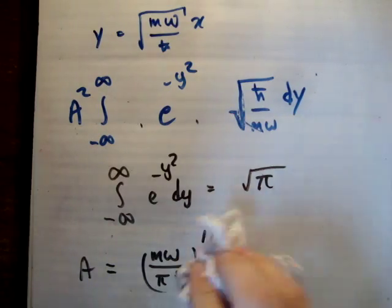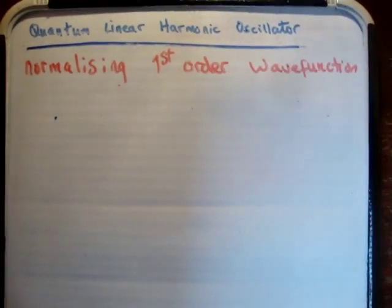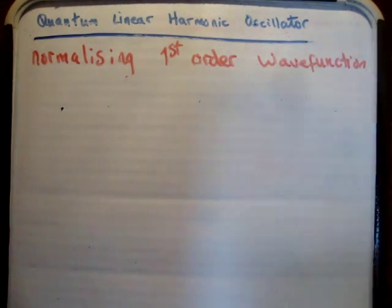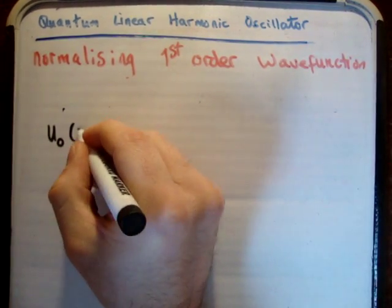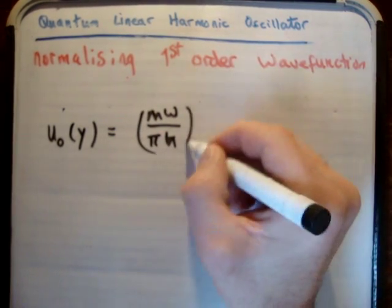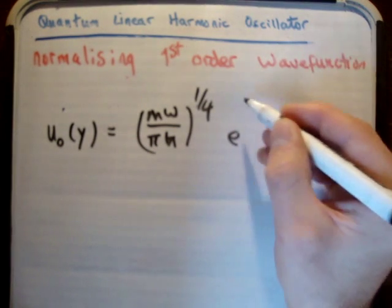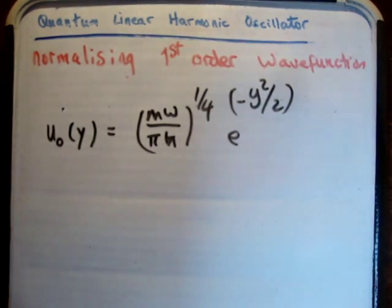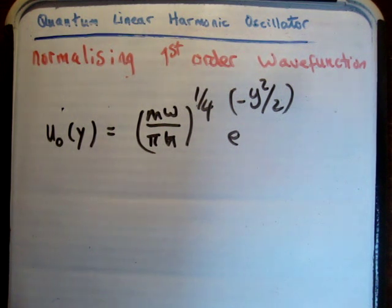It's pretty straightforward. So just for a bit of rigor, to write down our normalized first-order wave function, we know that u zero of y is equal to m omega over pi h bar to the quarter, e to the minus y squared over two. Of course, you can scale this to x if you wanted, but I'm not going to do that.